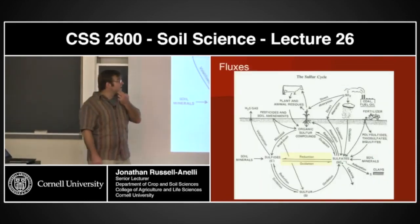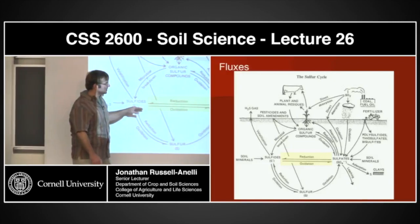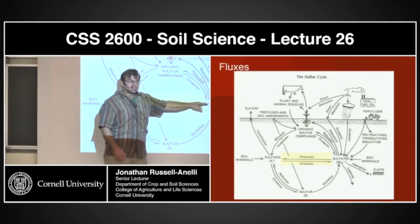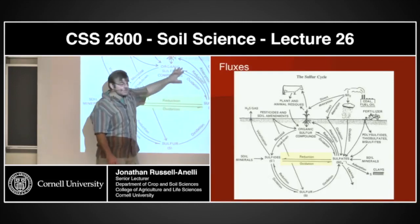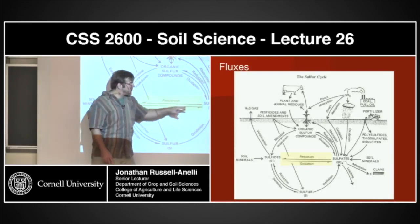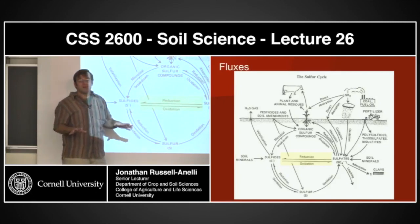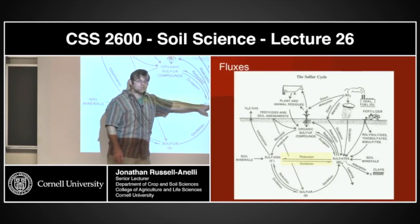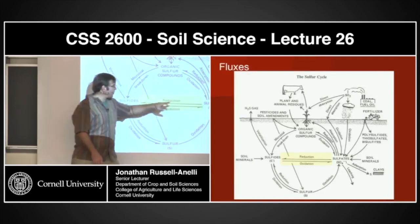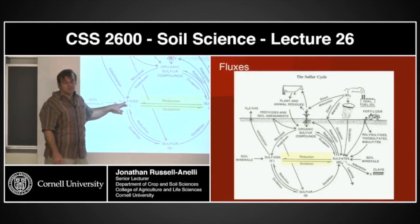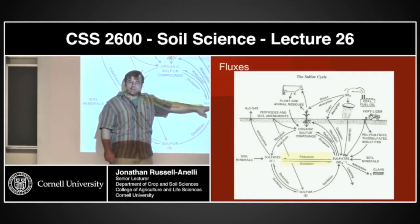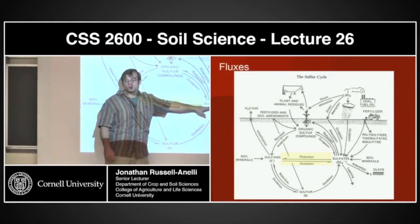The fluxes themselves — most of these we've already talked about. The flux that's really mediated by organisms is the conversion of sulfate to sulfide. The rest of the changes in form, except for decomposition, have nothing to do with microbial populations. The microbial population is basically taking sulfur from the sulfate form and turning it into the sulfide form, because there's no oxygen present and they're using the sulfate as an electron acceptor for respiration.